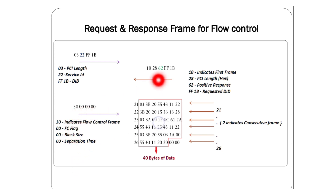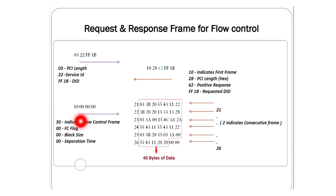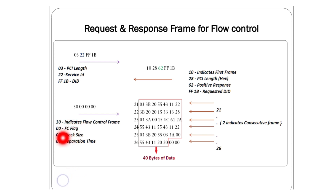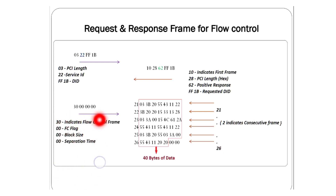For the flow control flag: if you find the data is more than you can handle, you can abort the operation by sending 02 in hex. If you want to wait, you send 01. The details of the 30 00 00 concept — flow control flag, block size, and separation time — will be covered in another video.